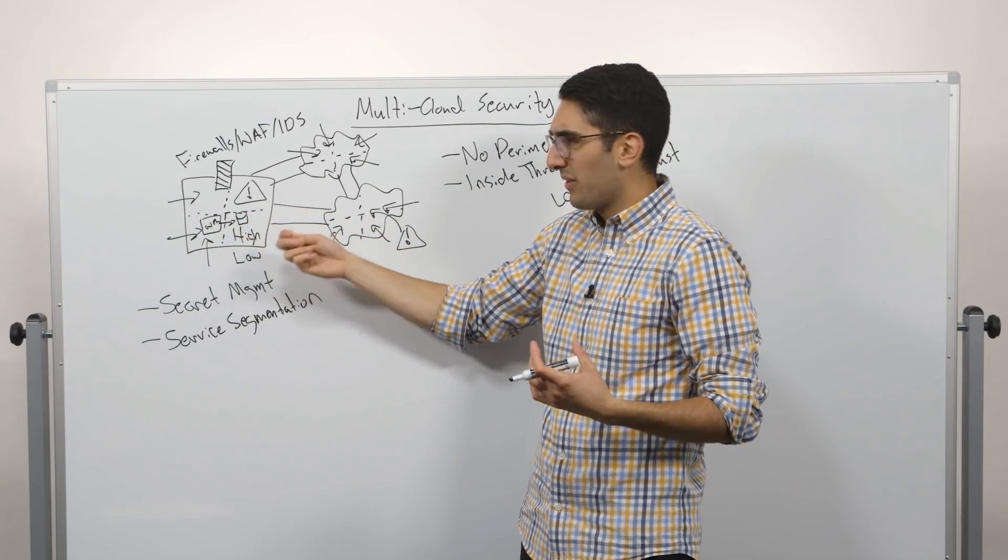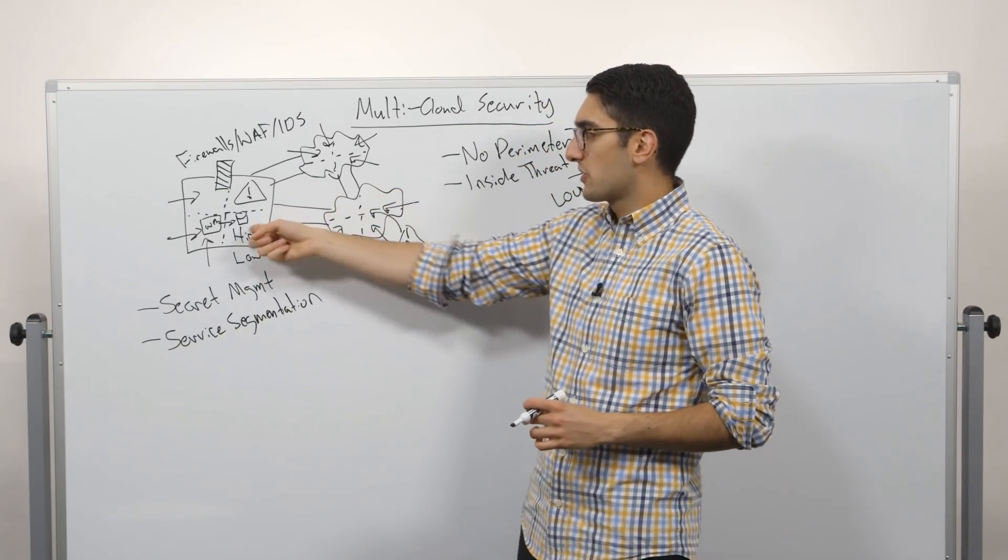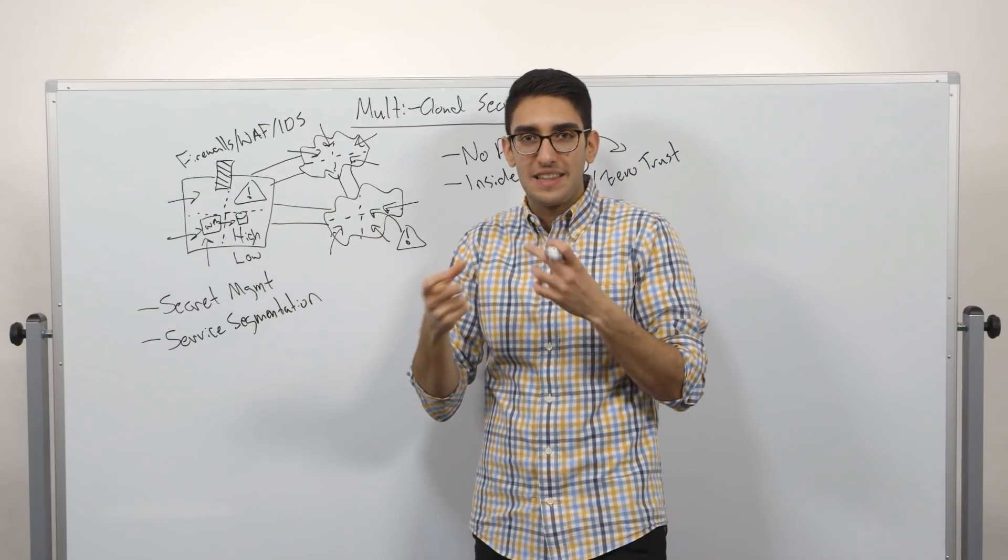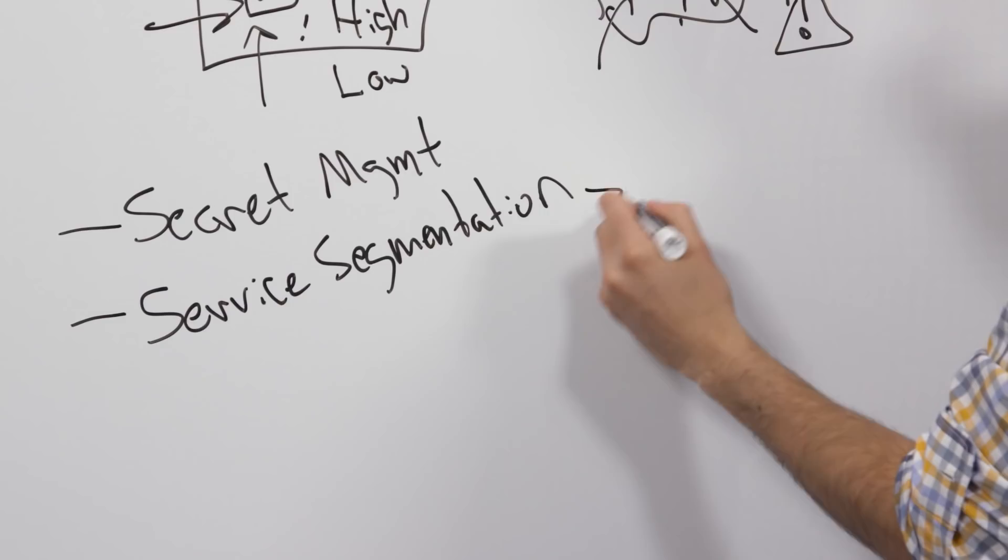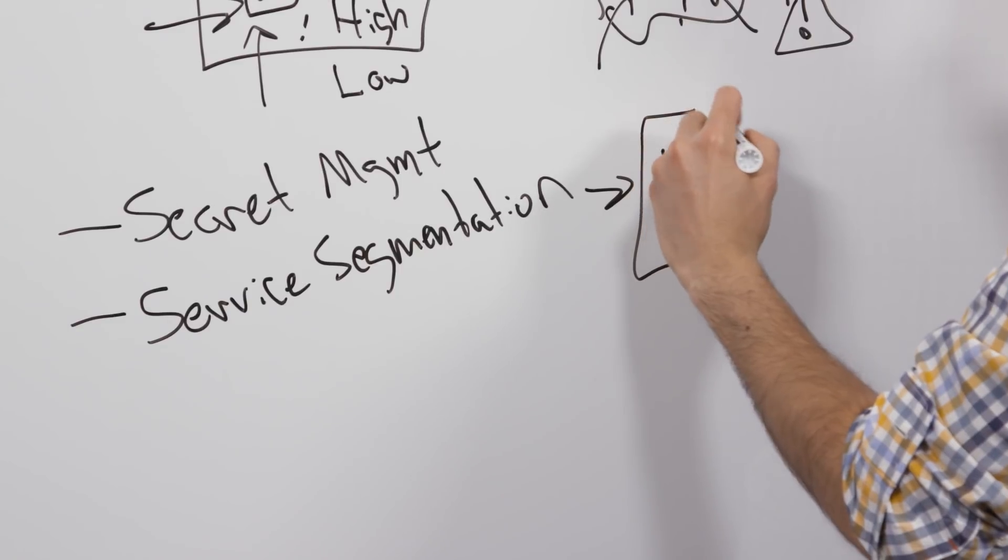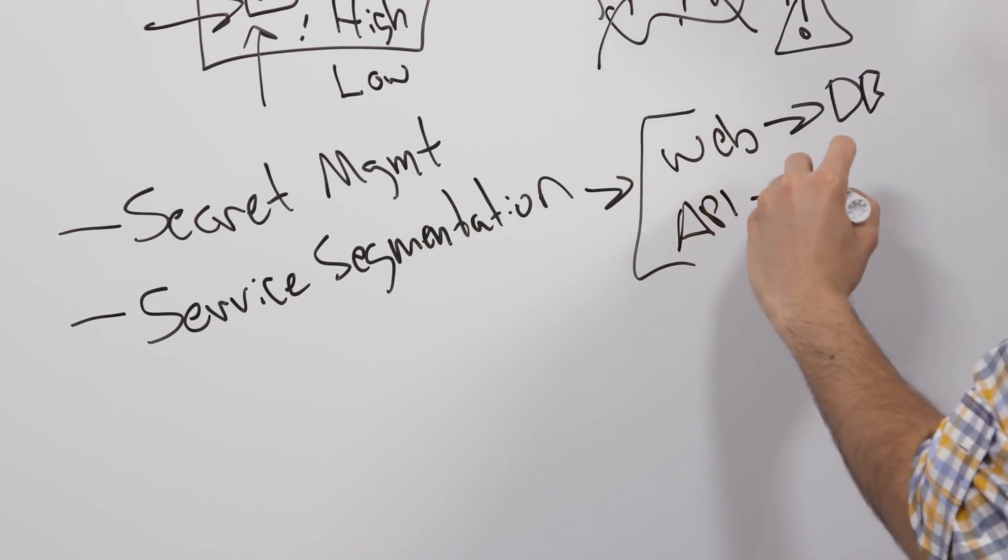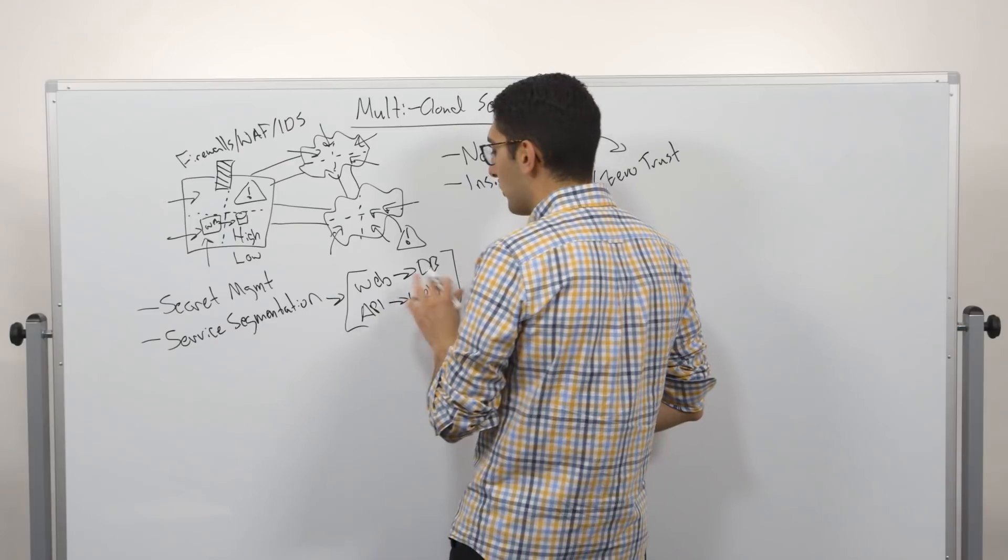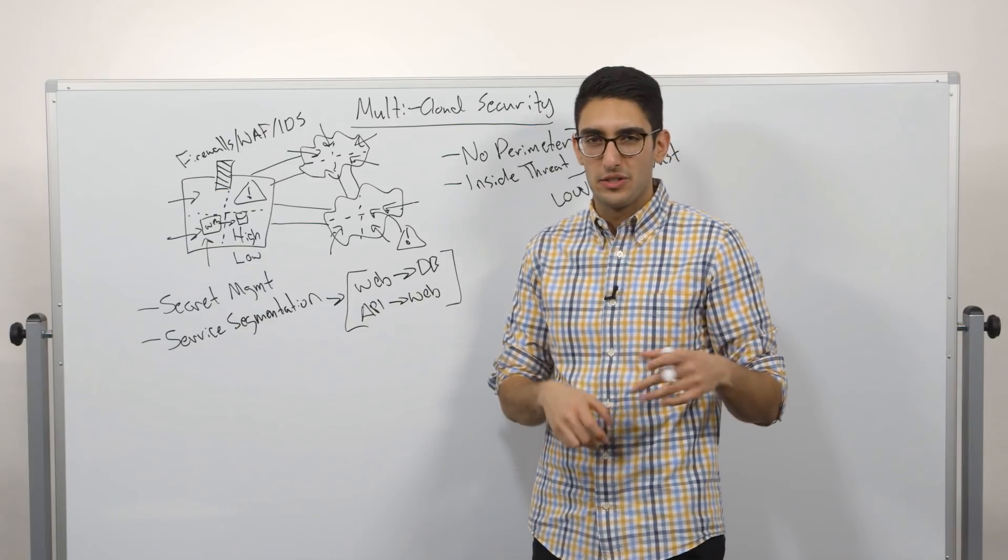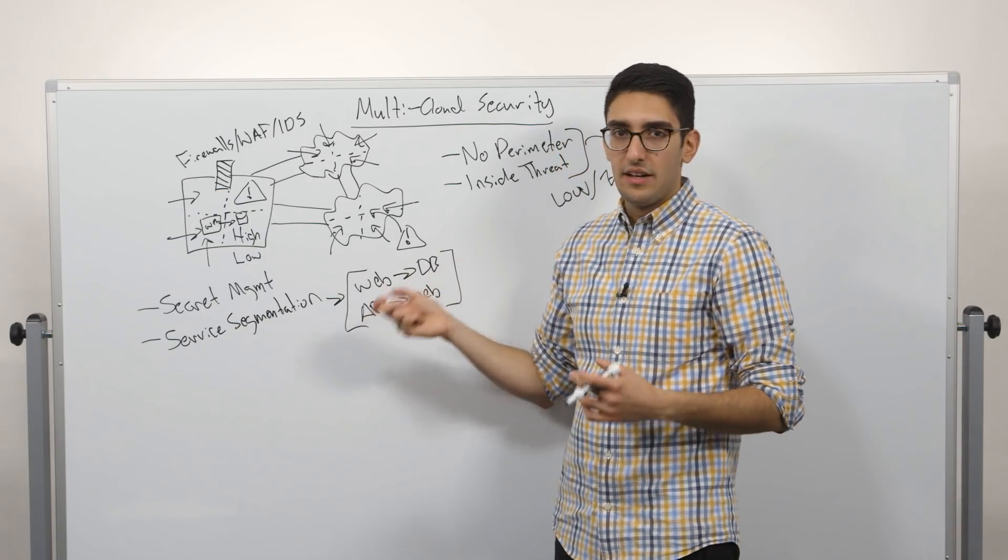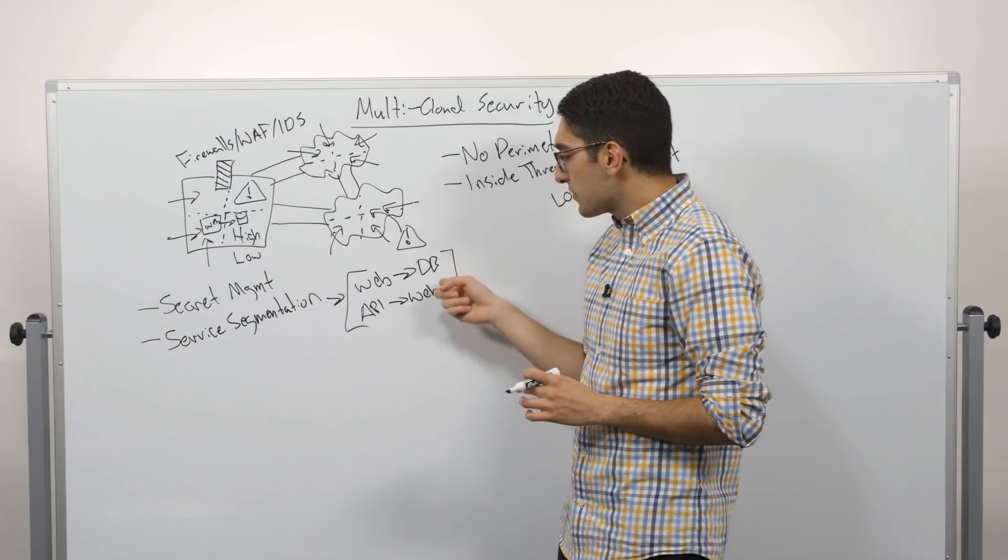So now how do we start to think about the segmentation of our network across these different environments? Because now I'm going to have an application over here that's calling into a database over here, and how am I enforcing that access now of who's allowed to talk to who? So what we'd like to be able to do is push this up a level and describe our rules at a more logical level. We can say our web server is allowed to talk to our database, our API server is allowed to talk to our web server. And what we really want to focus on here is thinking not in terms of IPs. We're not saying IP1 can talk to IP2 in sort of a host mode. Instead, we're talking about identity. The service that's identified as a web server is allowed to talk to the service that's identified as a database.